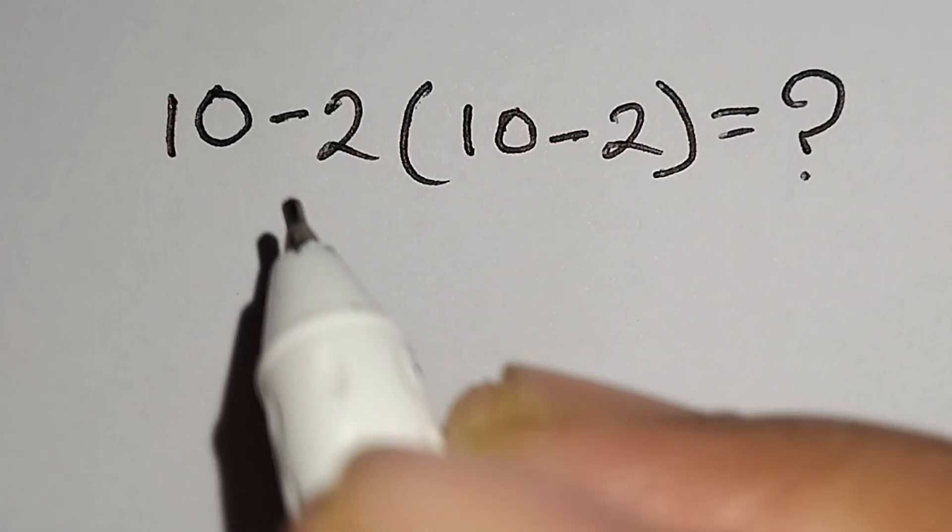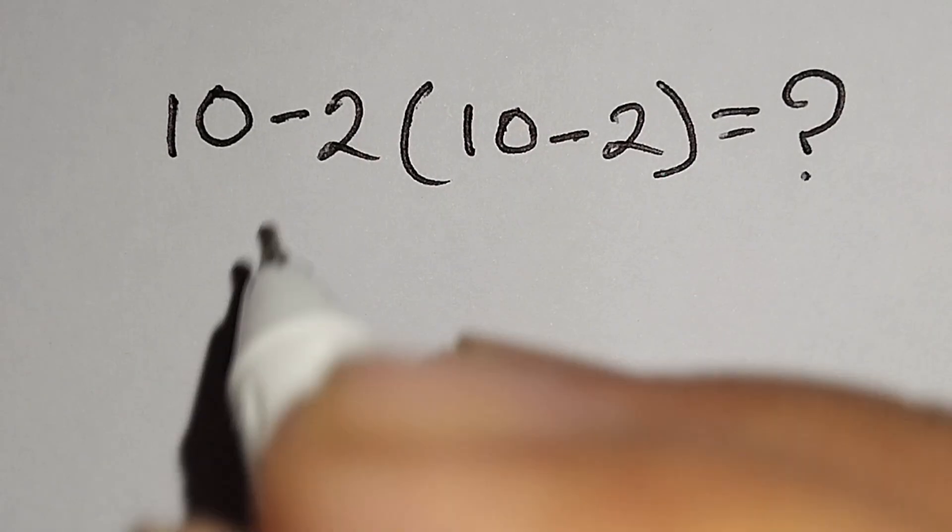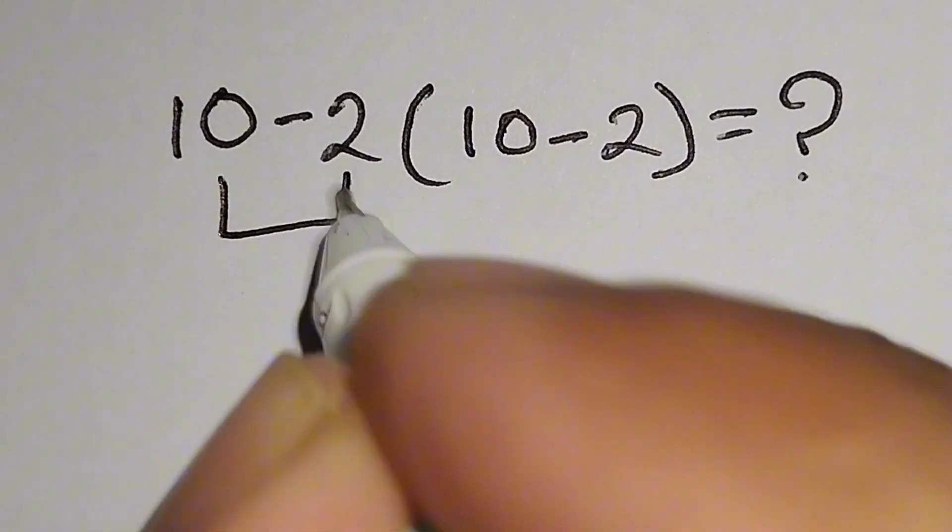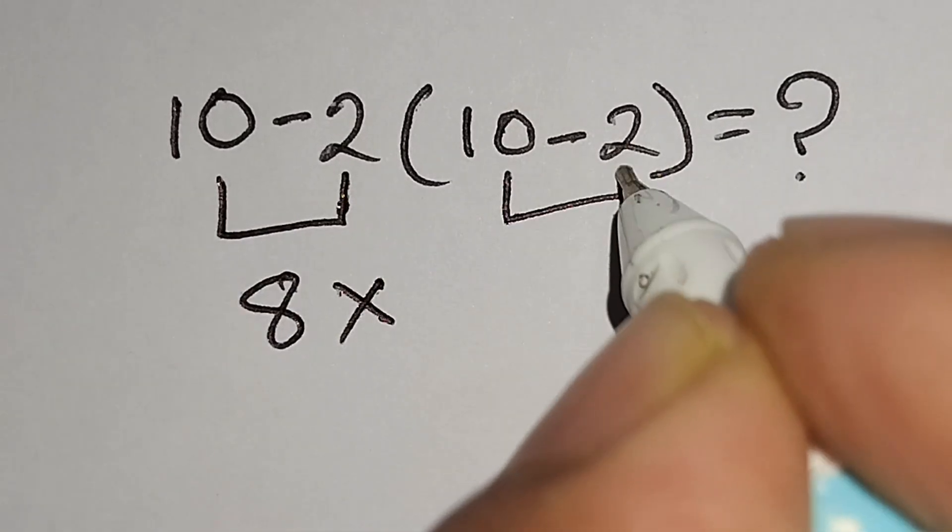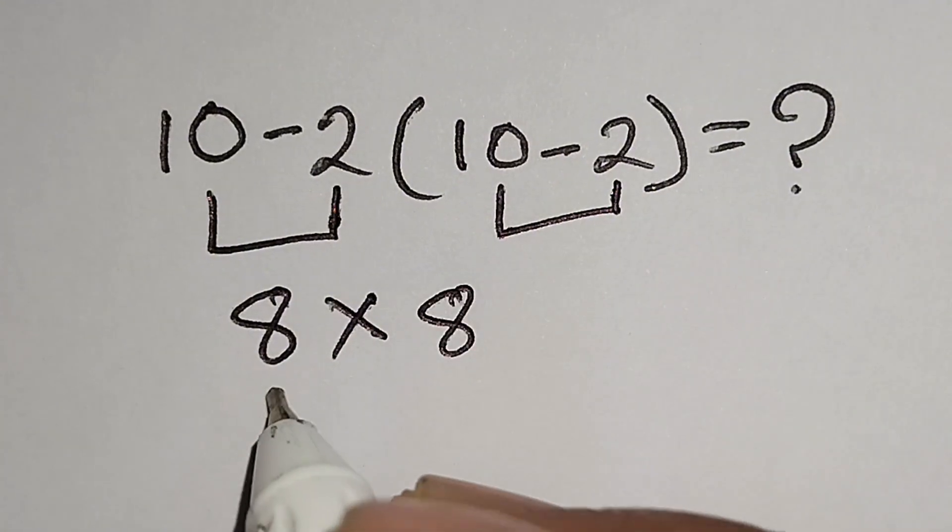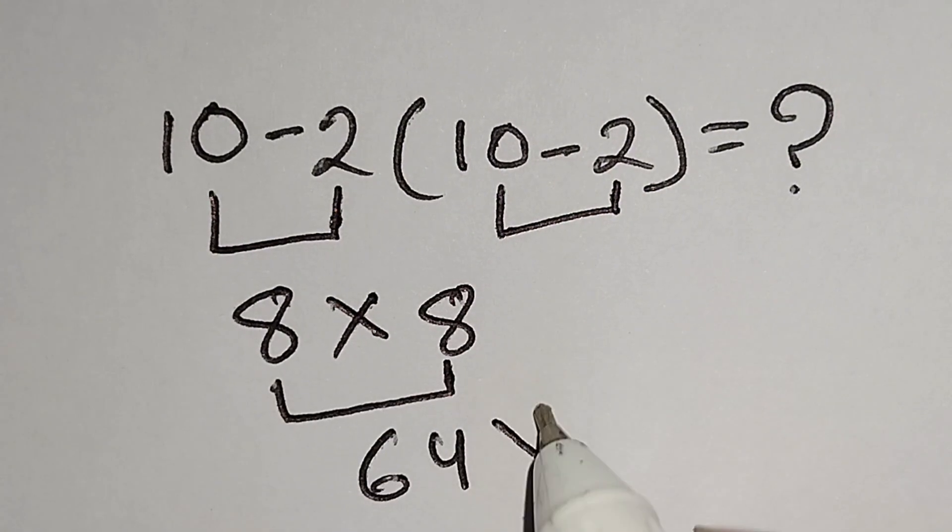Hi guys, this is a nice math problem: 10 minus 2 bracket 10 minus 2 equals what? Here, 10 minus 2 gives us 8, multiply 10 minus 2 gives us 8. 8 multiply 8 gives us 64, but it is not correct.